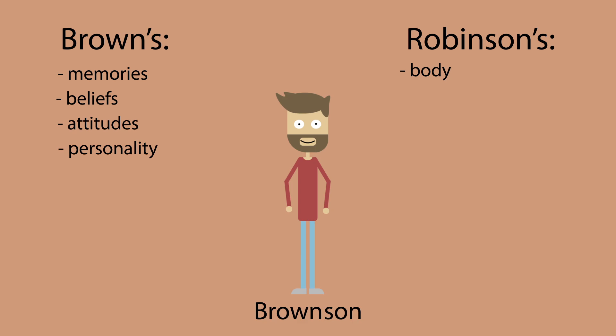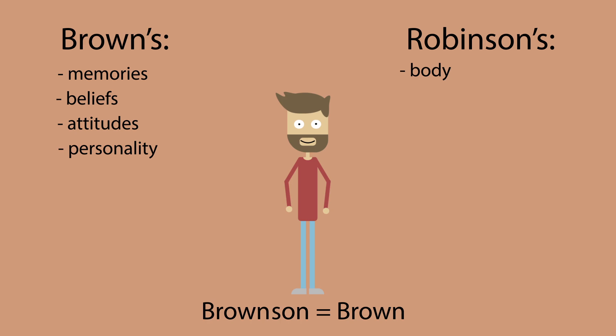The story of Brownson highlights that bodily continuity is not sufficient for personal identity, but rather it is the physical continuity of a specific part of the body, namely the brain, which is important. But is the brain even necessary for identity?